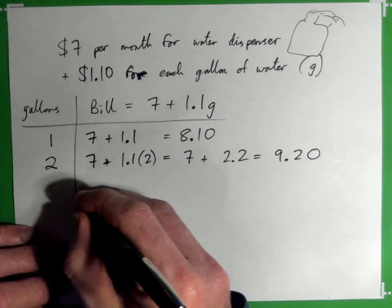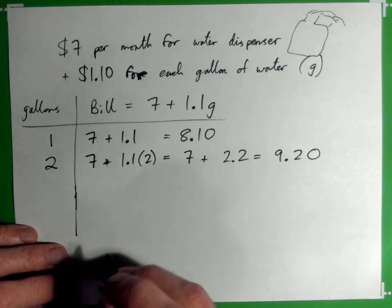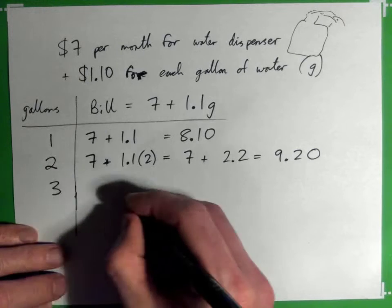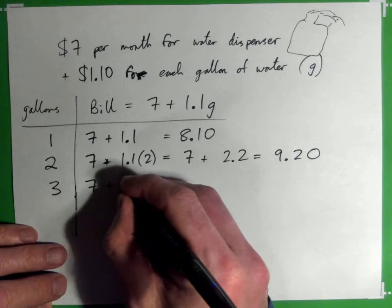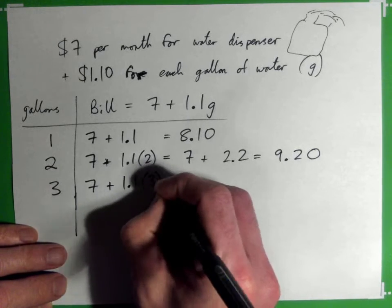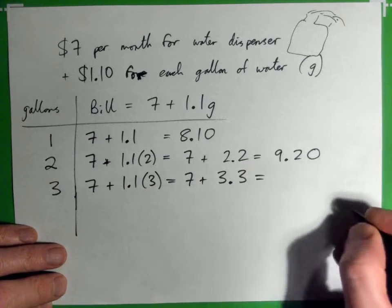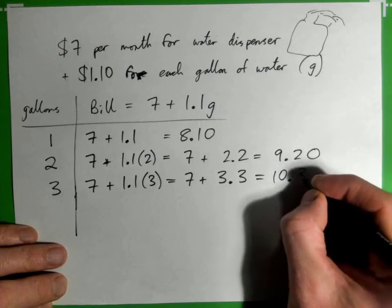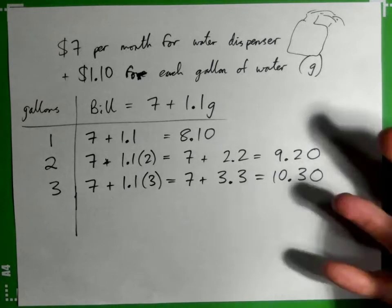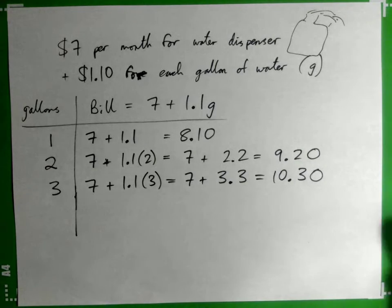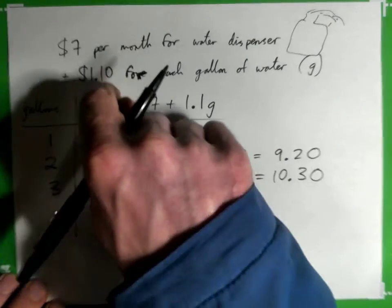And so on: three gallons of water, 7 + 1.1 times 3. I'm just doing this to make it clear—$10.30. I'm just trying to explain. Does that make sense what's going on? You're charged for the dispenser and then $1.10 for each gallon of water.